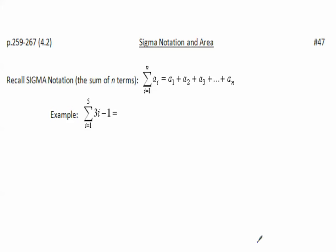Let's recall first sigma notation. The sum of n terms—the sigma is for sum—looks like this, where the n represents the upper limit and the 1 represents the lower limit, and the a_i is the formula that we're using. We're plugging in the lower limit up to the upper limit and adding them together. That's the sum.